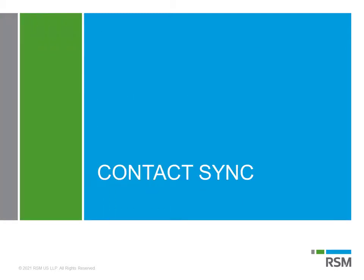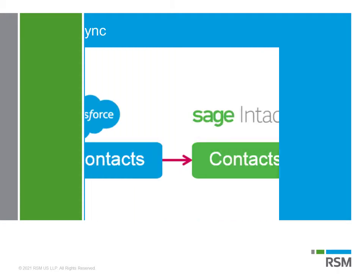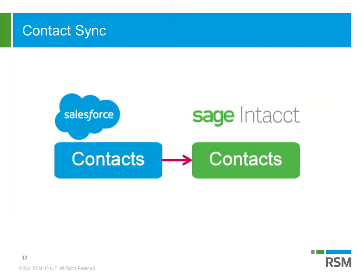Just like how Salesforce accounts can create Sage Intacct customers, Salesforce contacts can also create Sage Intacct contacts. The advanced CRM integration adds bill-to and ship-to fields on both the account and opportunity records, which creates relationships with Salesforce contacts. And if someone forgets to add bill-to or ship-to contacts, no worries — Sage Intacct automatically creates contact records from addresses in Salesforce.